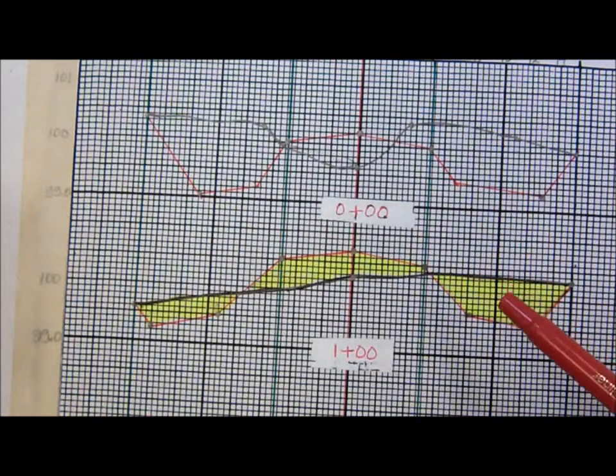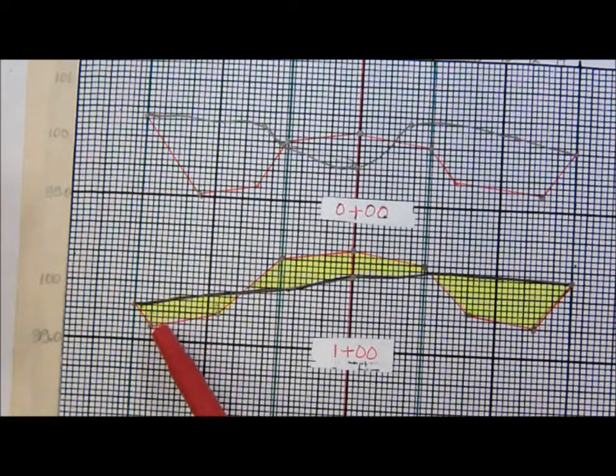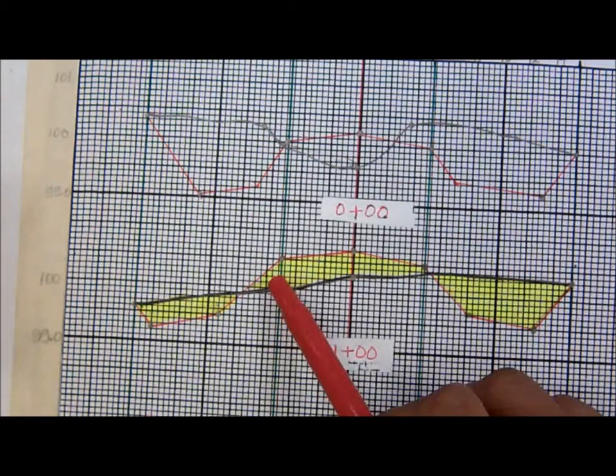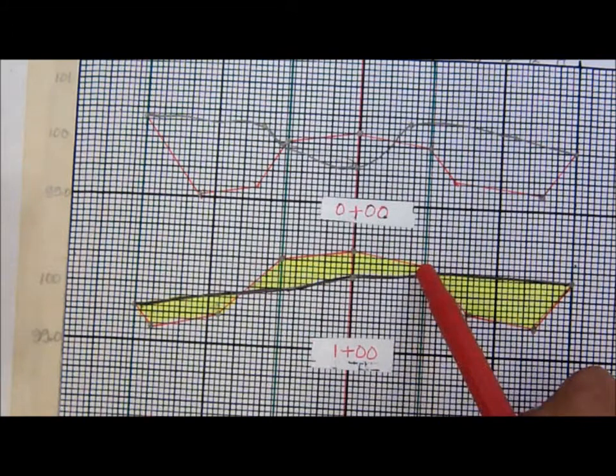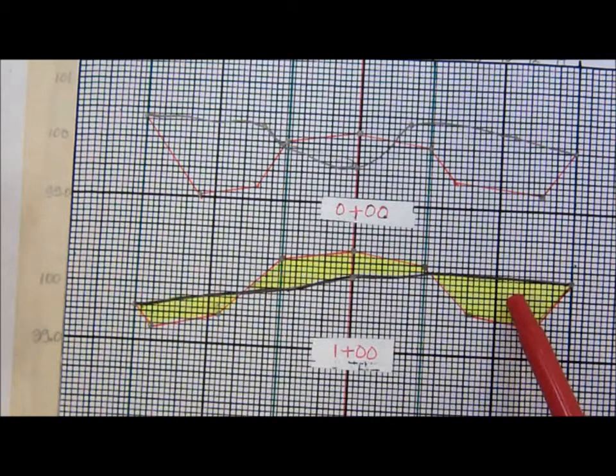Let's look at our cross section. We have the cross section already plotted up and the yellow areas are the areas that you are going to be required to actually acquire. I'm going to just do the embankment area which is just under the pavement of the roadway. You have your left ditch and your right ditch. Station one plus zero zero.